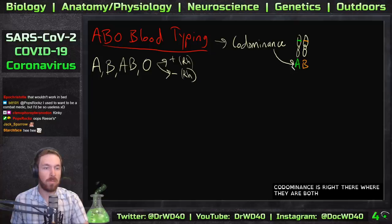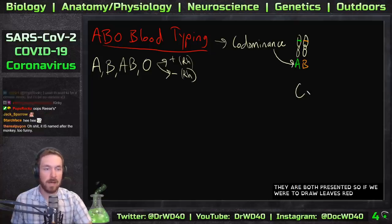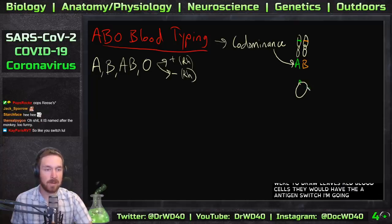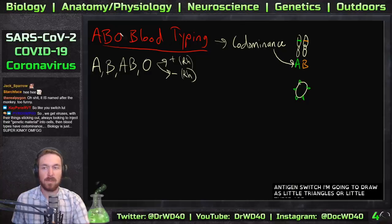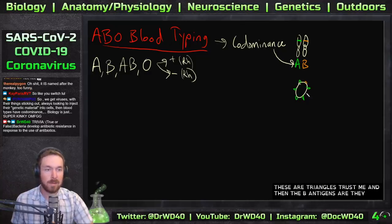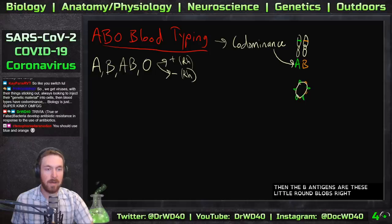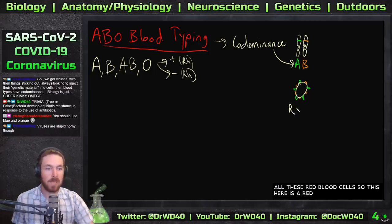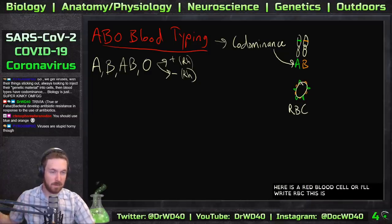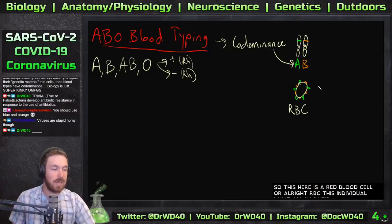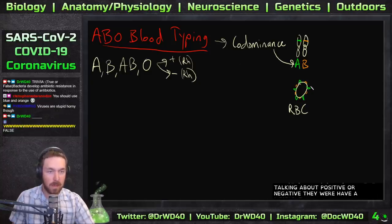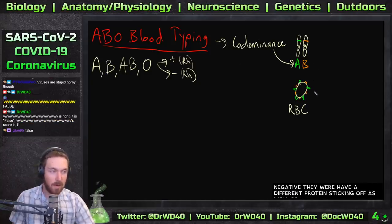If we draw these red blood cells, they would have A antigens — I'm drawing them as little triangles — and B antigens as little round blobs. So all these red blood cells have these little antigens sticking off. This is a red blood cell, or RBC. For positive or negative, they would have a different protein sticking off as well — either having that protein or not.